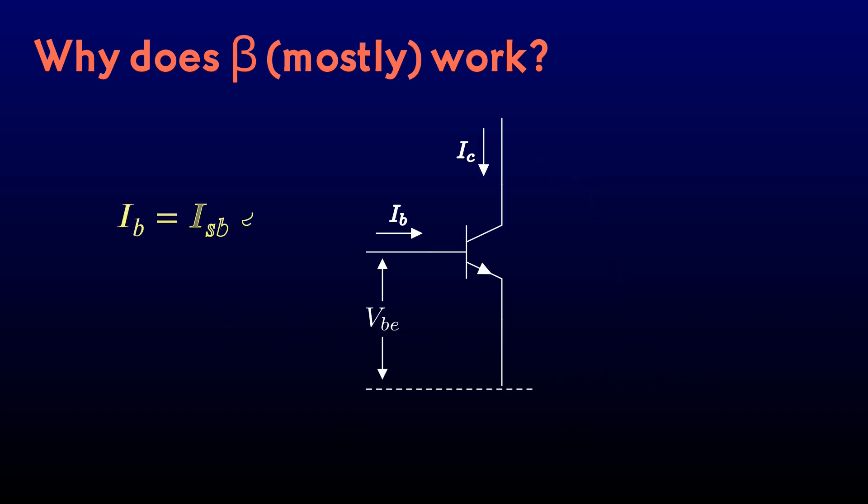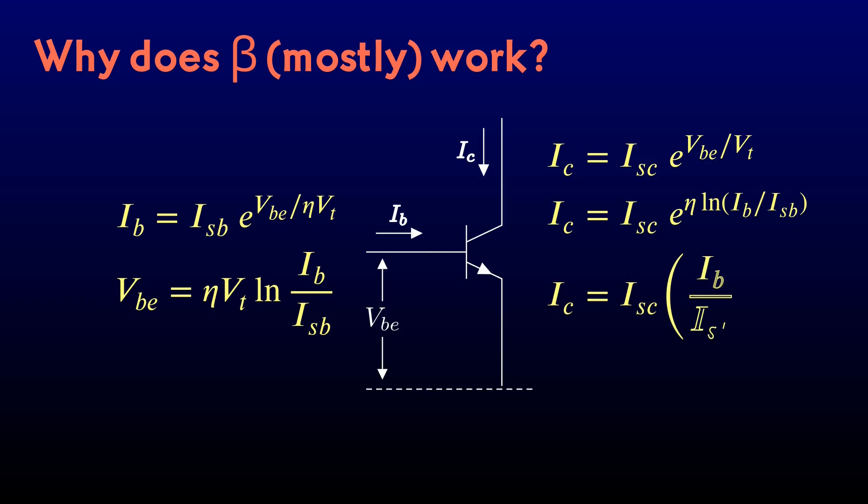Shockley's diode law tells us what base current will be induced by a given base voltage. But it's equally valid to say that a given base current induces a voltage between base and emitter. The Ebers-Moll equation tells us the collector current that the transistor will pass at a given base voltage. We can substitute in the base voltage that the diode law gave us. And the thermal voltage cancels out. We can also simplify the exponential. Note that Eta is close to 1. For the transistor we've been playing with, it's about 1.3. That means that the equation will be nearly linear.